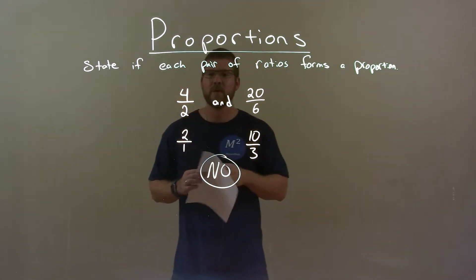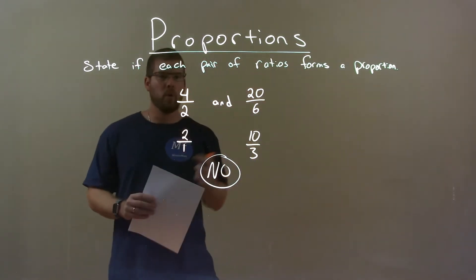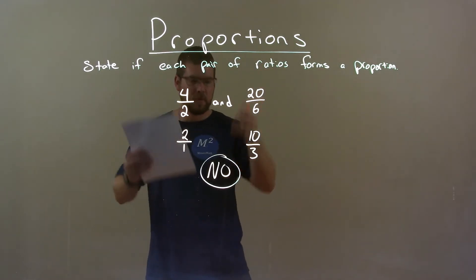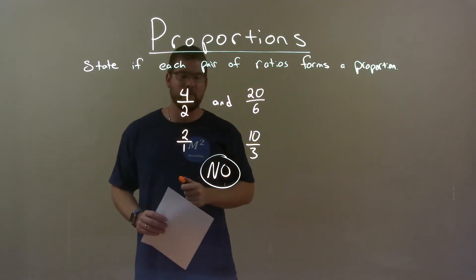Quick recap. We're given 4 over 2 and 20 over 6, and we have to see if this pair forms a proportion. Well, in doing so, I just simplified both in the simplest form, saw that they were not the same, and so our final answer is just no.